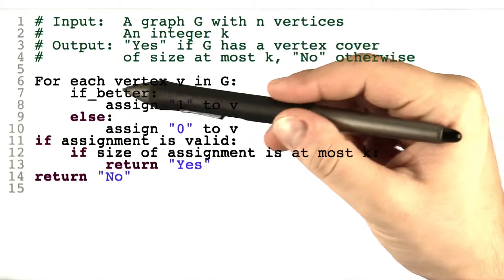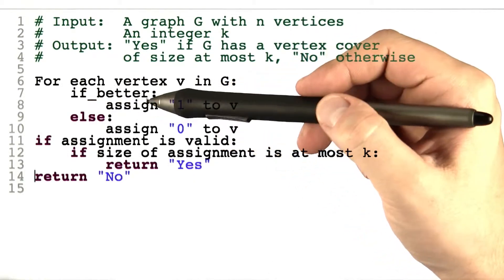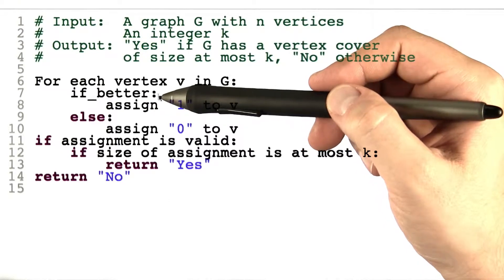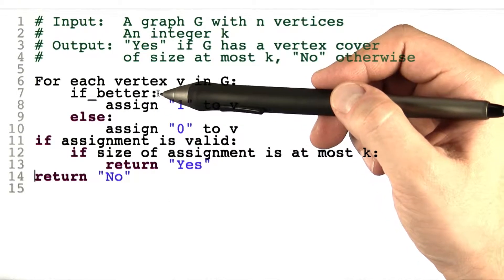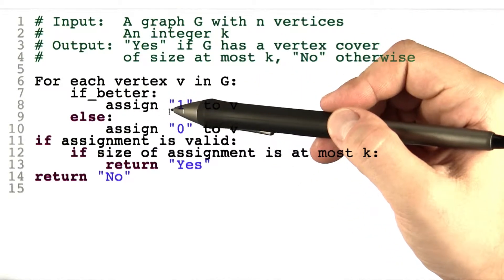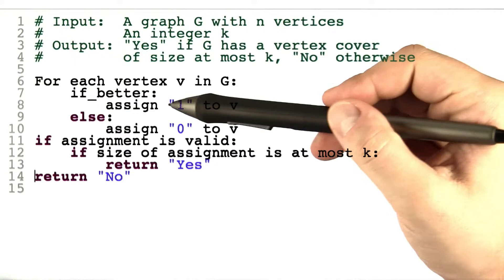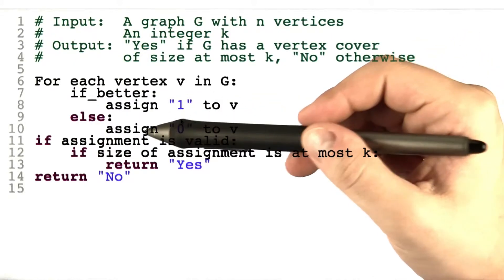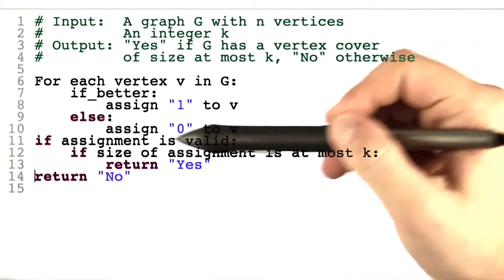The first time you see this kind of use of the if_better function, it might seem a bit strange to you. I'm going to explain what it does and how we're using it here. We're using this if_better function to guess for us which vertices to put into the vertex cover and which vertices we can leave out.